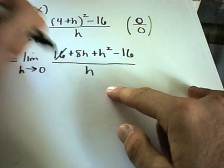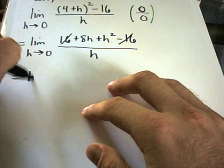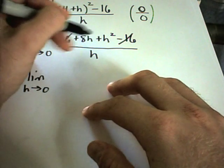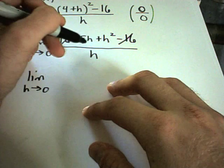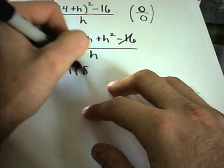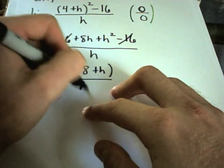The 16s will cancel out, and I'm left with 8h plus h squared in the numerator. Since they both have an h, I can factor an h out of there. Then I have 8 plus h left over, divided by h.